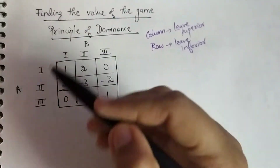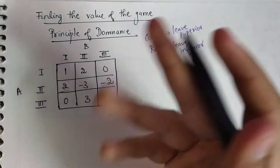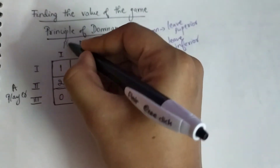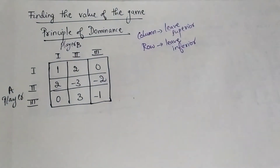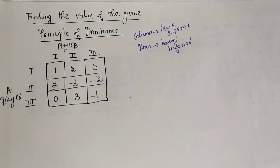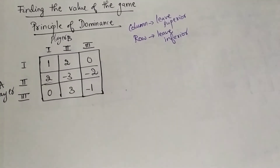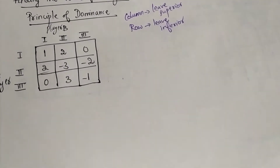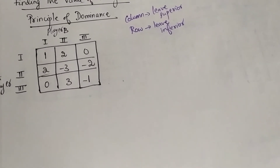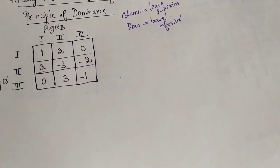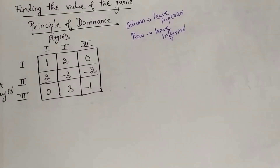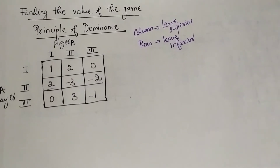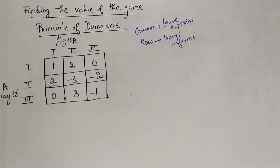Here you would be given a matrix like this and you would be asked to find out the value of the game and what strategy is used by player A and player B. The principle of dominance states: if one pure strategy of a player is better than or superior to another, then the inferior strategy may be simply ignored. With respect to player A, who tries to maximize his profit, and player B, who tries to minimize the loss, the inferior column will be retained compared to the superior one.